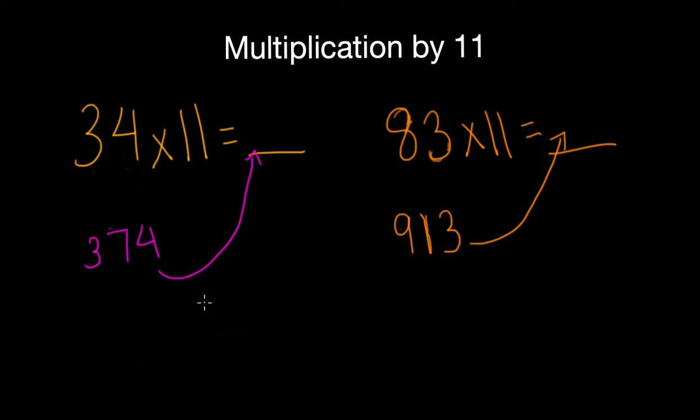Let's take our 34 example. So 34 times 11 is really the same as 34 times 10 plus 34 times 1, which is the same as 340 plus 34.